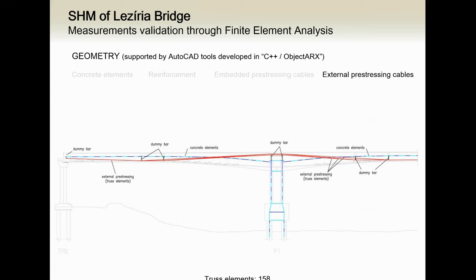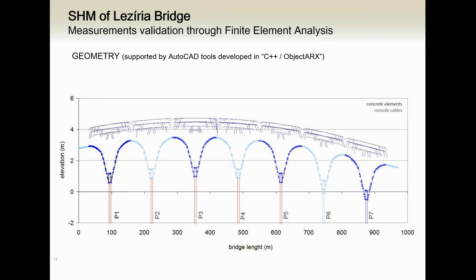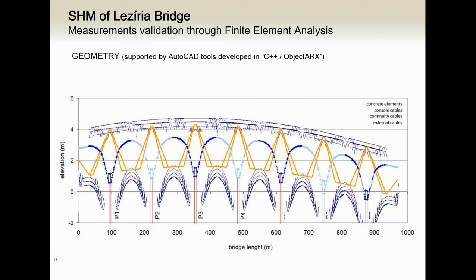I was presenting just one span and a half, but now I enlarge this view to the full length of the bridge. As you can see, we have here the seven piers. I want to stress that there was no simplification in the geometry — the geometry here is the real geometry taken from the final drawings after construction, because we are developing a finite element model to be used for assessment, not for design.